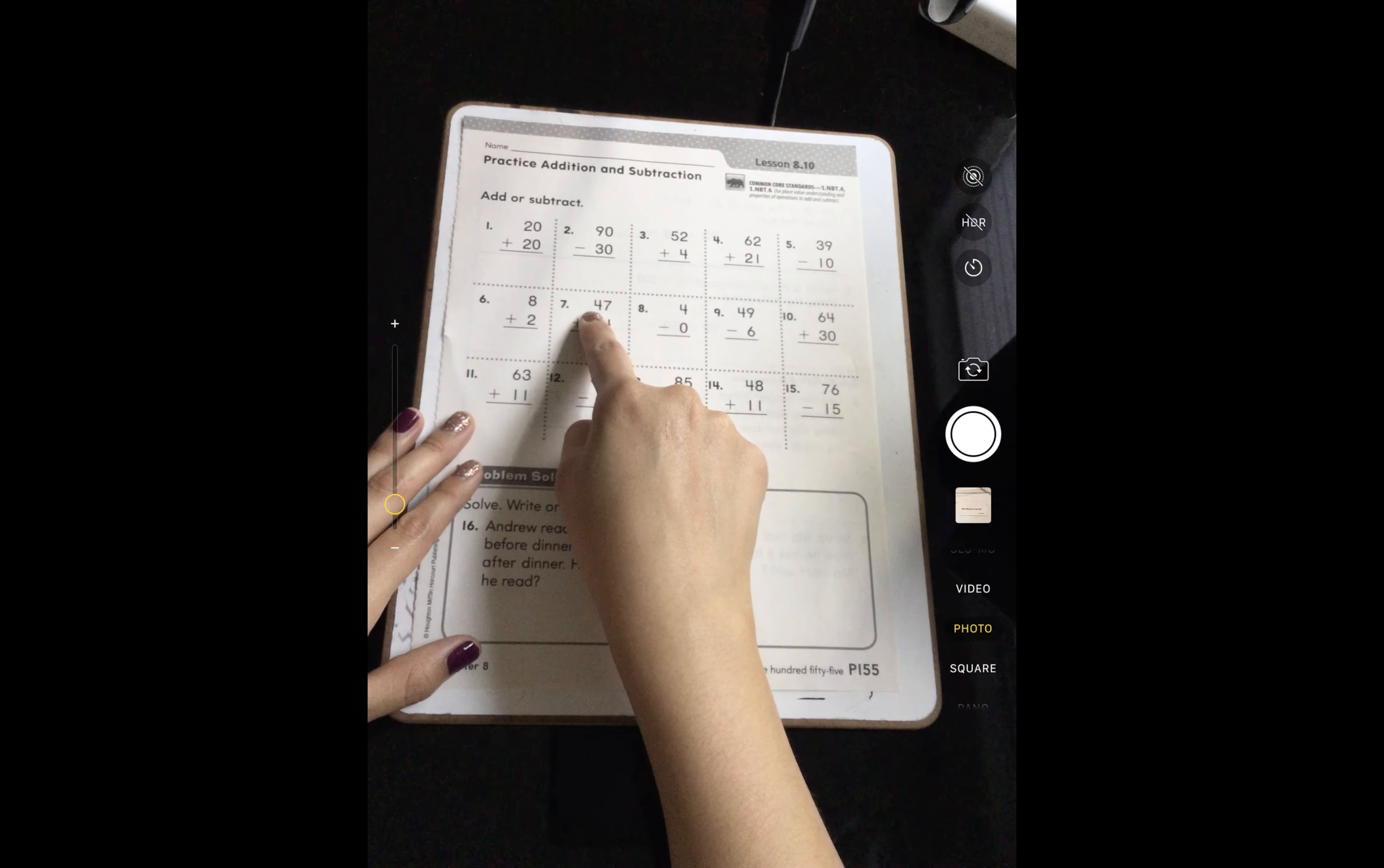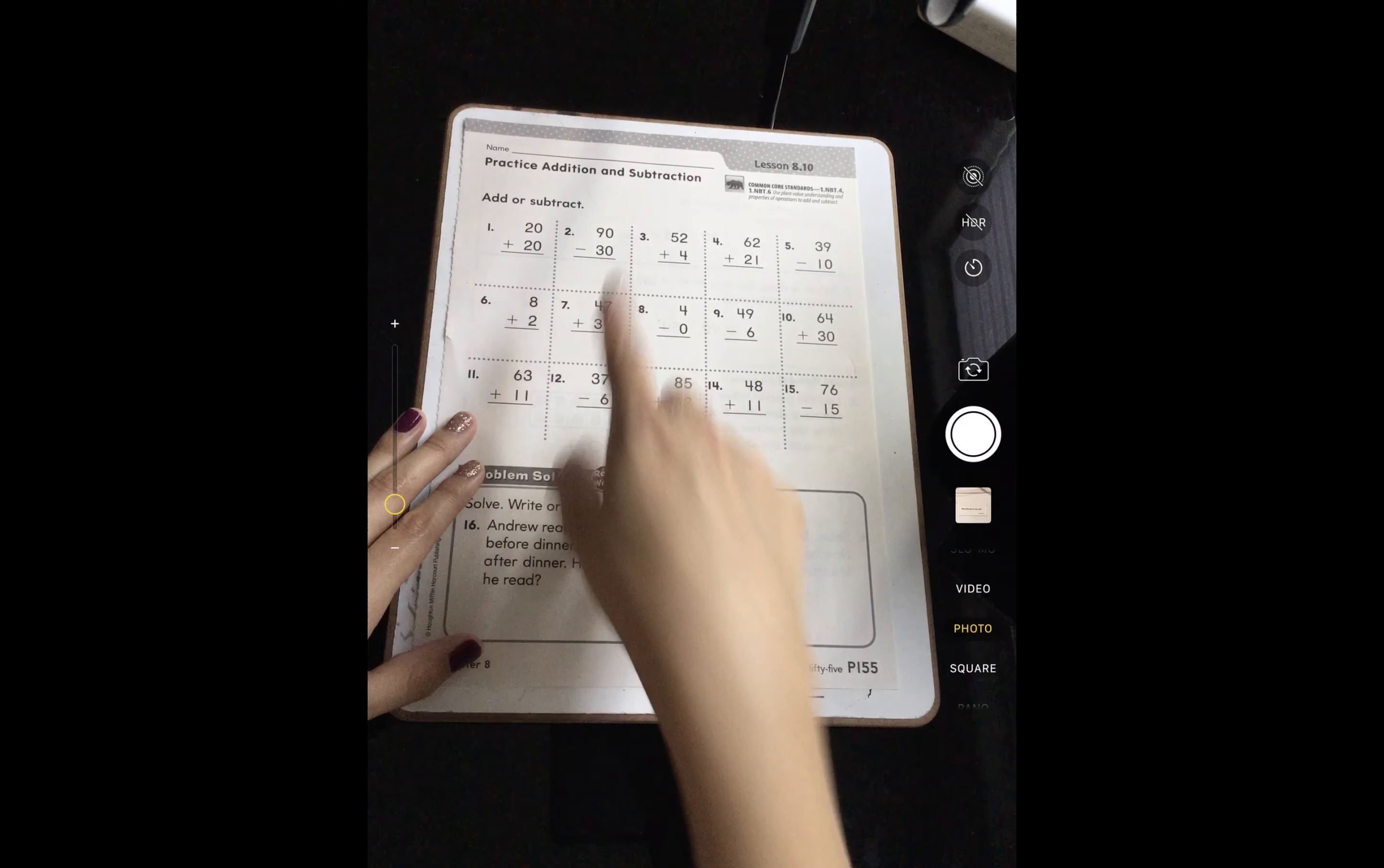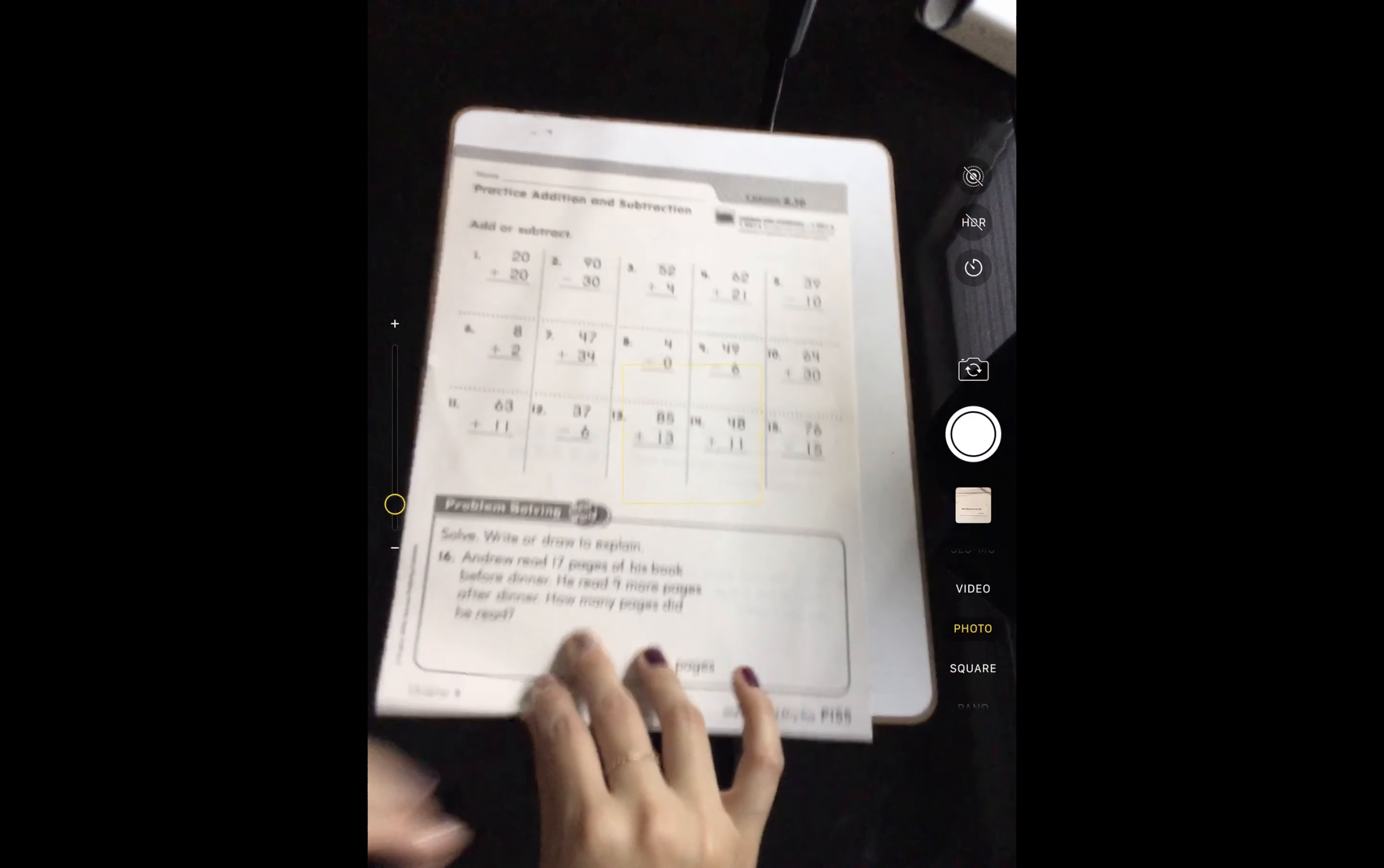Here we do not have to draw quick pictures. Here all you have to do is add your ones and your tens, or you're going to be subtracting them. So I'm going to show you how that looks. Go grab a whiteboard marker and eraser or a pencil and paper. We're going to practice a couple before I show you how to do it on your actual worksheet.